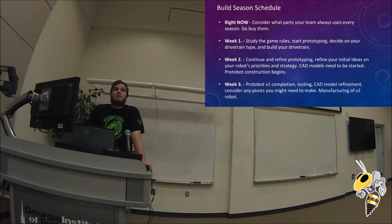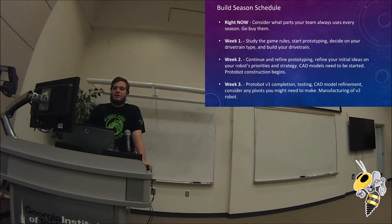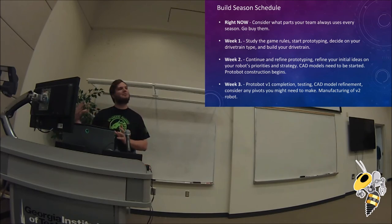CAD models usually sometimes start in week one. But CAD models are definitely starting by week two. And then our team builds two robots. And we typically start building the first prototype robot using the more efficient prototype manipulators and end effectors starting week two. Week three, we typically have some sort of a protobot completed if the game lends itself to being able to do that.